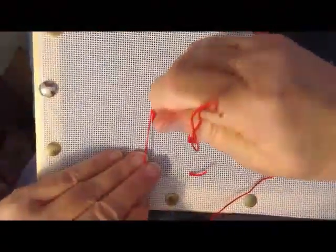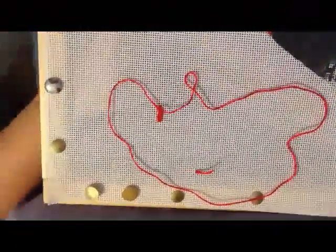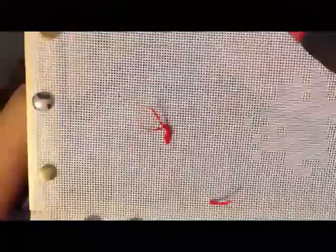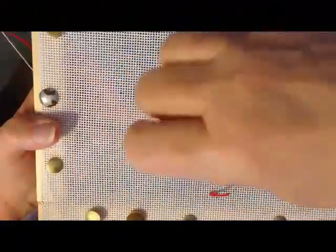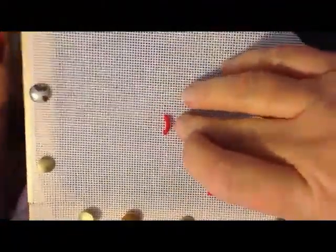We're going to go back through the canvas at B. We're going to snug it down. And we've got a little twist in our flourishes, which is fine if that's the way you want it to look. And there you go. That's a cast on bullion.